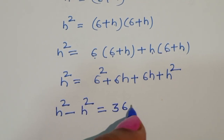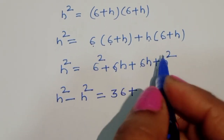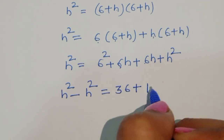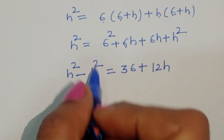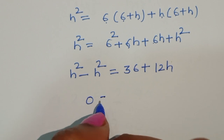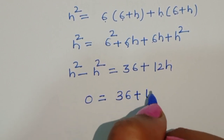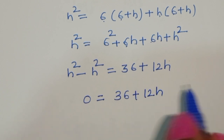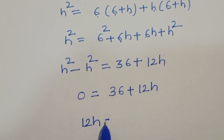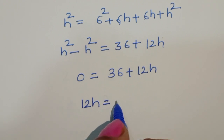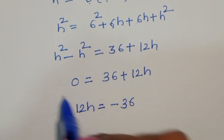Now h squared minus h squared equals 0, which equals 36 plus 12h. So we can write 12h is equal to minus 36.